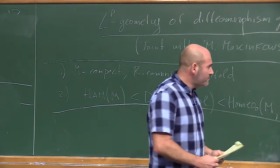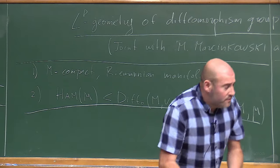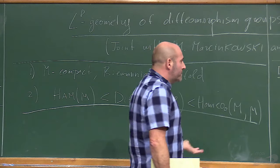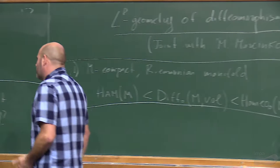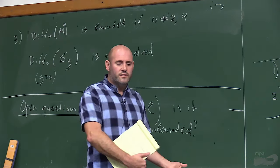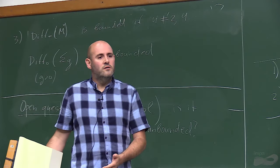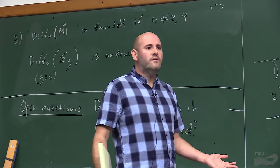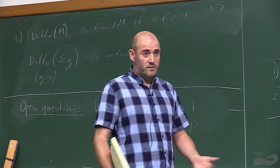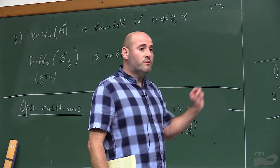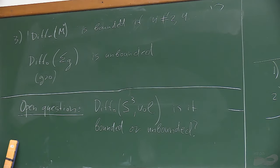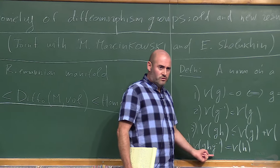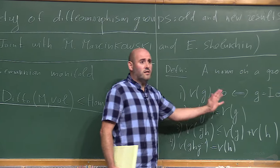These are some facts about bi-invariant geometry. In the beginning I asked: if you have Ham of the disk inside Ham of the surface, can we say something about whether this embedding is quasi-isometric? I cannot say anything with respect to any bi-invariant geometry I know. So now let me remove the conjugation invariance condition and discuss some interesting right-invariant metrics on diffeomorphism groups, and ask similar questions.